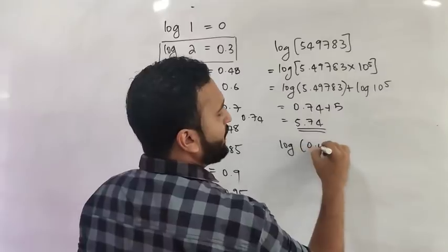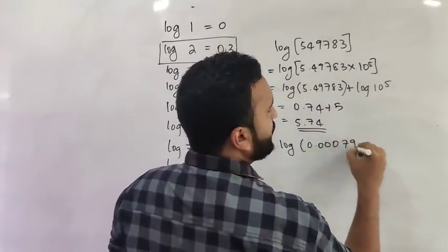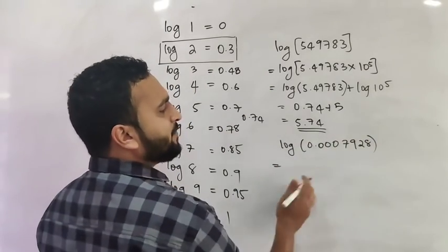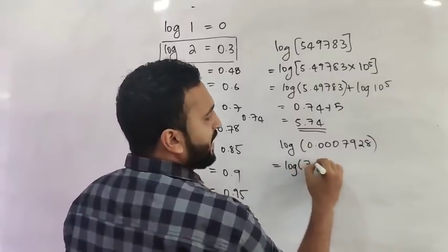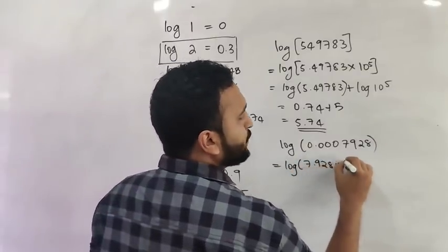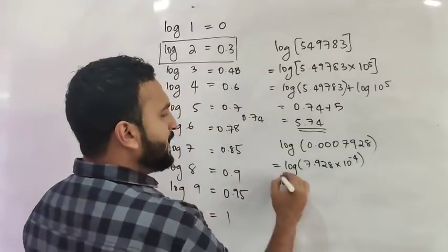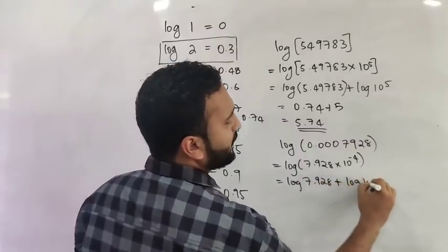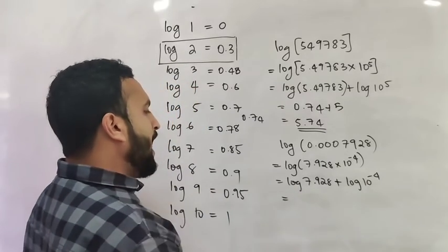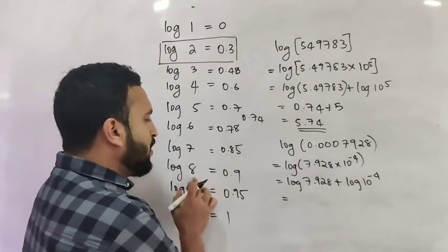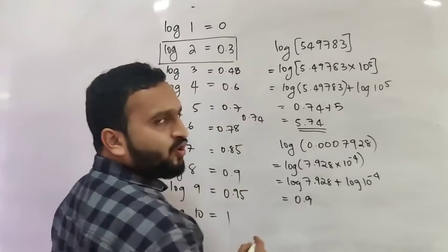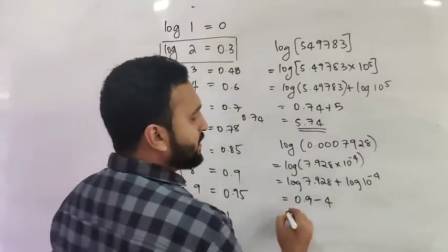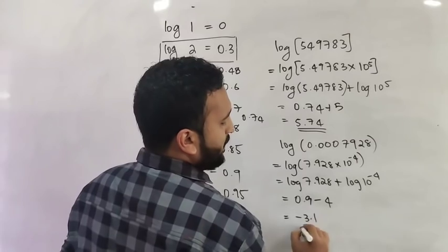For log of 0.007928, this is a very small number. We write it as log of 7.928 × 10⁻⁴. This equals log of 7.928 plus log of 10⁻⁴. Log of 7.928 is approximately log of 8, which is 0.9. Log of 10⁻⁴ is −4. So 0.9 minus 4 equals −3.1.